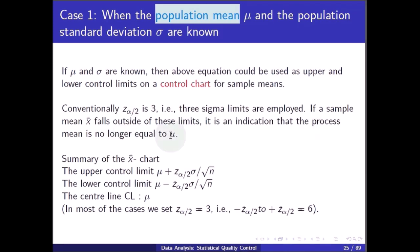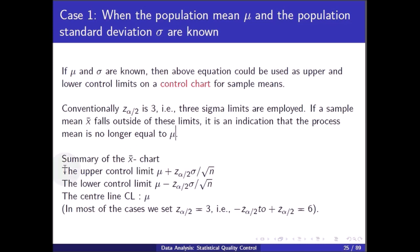Summary of the X-bar chart (Case 1): the upper control limit (UCL) is mu + z_alpha/2 * (sigma / sqrt(n)), the lower control limit (LCL) is mu - z_alpha/2 * (sigma / sqrt(n)), and the center line (CL) is mu. In most cases we set z_alpha/2 = 3, so the total range from -z to +z is 6 sigma.